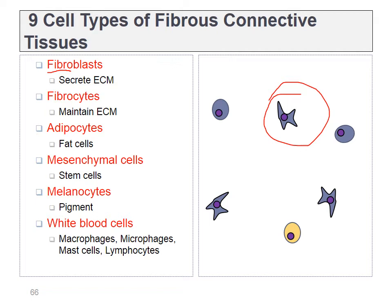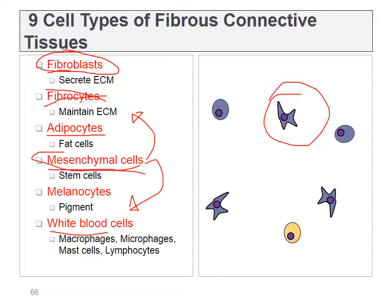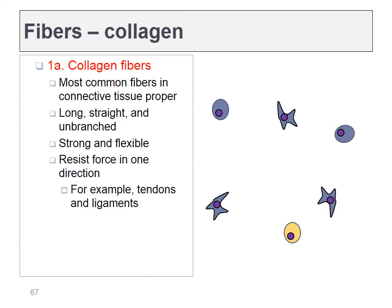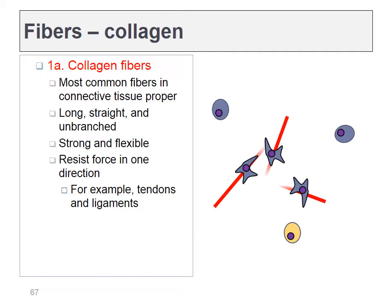Technically a mature fibroblast is called a fibrocyte, though we typically never use this word. Adipocytes will be important in adipose tissue. Mesenchymal stem cells are functionally critical — they give rise to all the other cell types found in connective tissue, and even cell types in tissues we've already covered. Melanocytes will be important in the next chapter. We'll focus mainly on fibroblasts and mesenchymal stem cells.